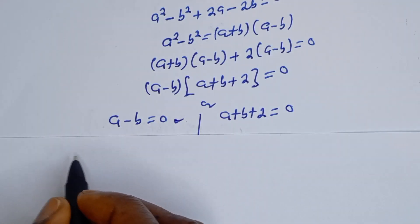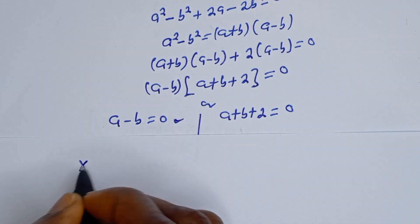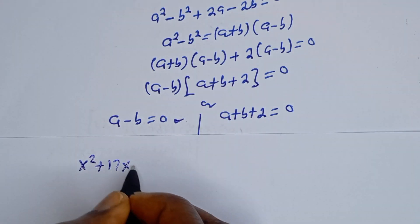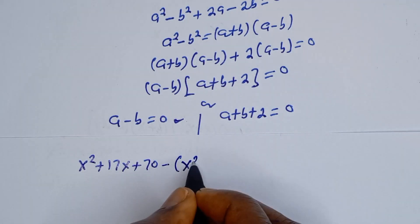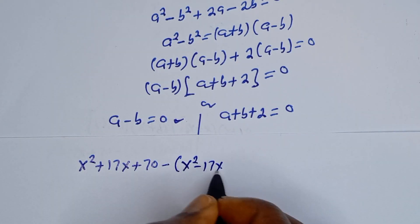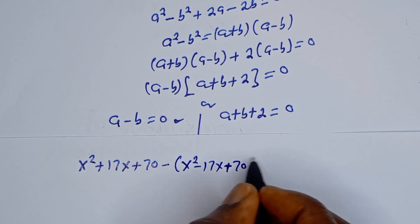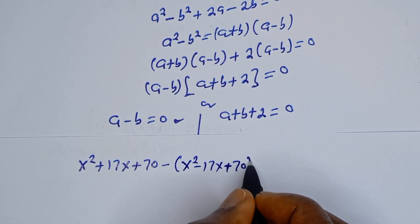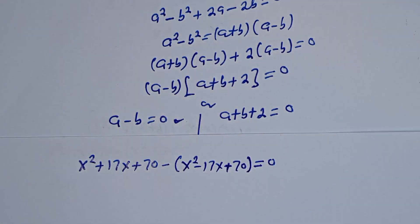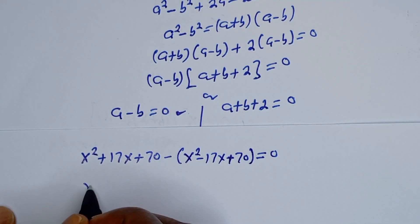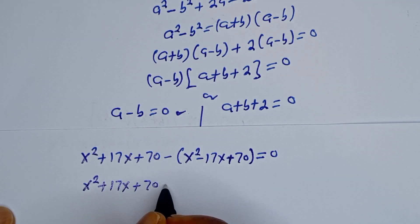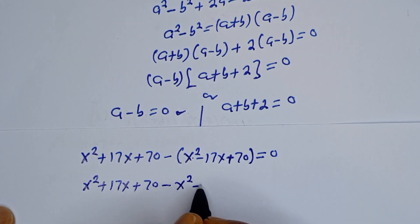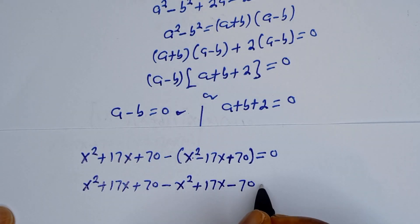We know that initially A equals S squared plus 17S plus 70. Setting A minus B equal to 0, we substitute: S squared plus 17S plus 70 minus S squared minus 17S plus 70 equals 0.